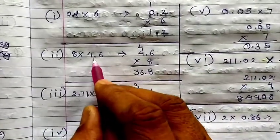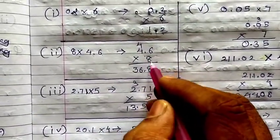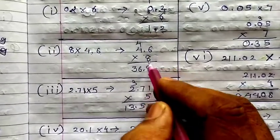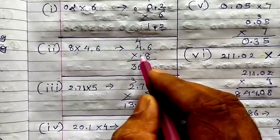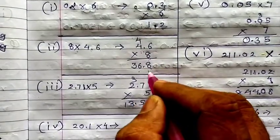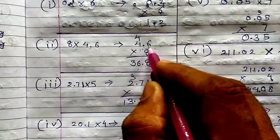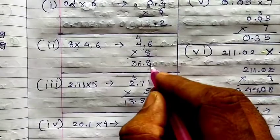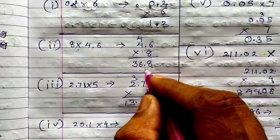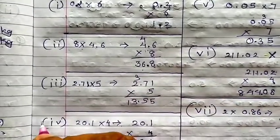Next, 4.6 multiplied by 8. 8 sixes are 48, carry 4. 8 fours are 32, plus 4 is 36. Now where to put the decimal? After the decimal there is 1 digit, so from the last digit leave 1 digit and place your decimal there.